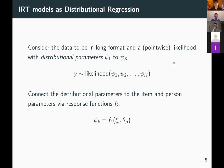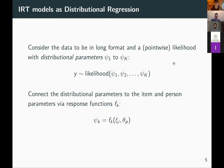What makes this special is that we no longer only predict the mean parameter of the likelihood. We can potentially predict all distributional parameters using item and person parameters, not just the mean, making this more flexible. BRMS has evolved to support these kinds of complex distributional models, which we leverage to make IRT modeling more flexible.